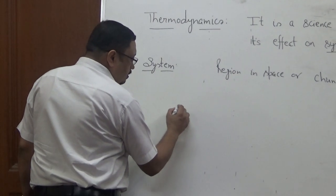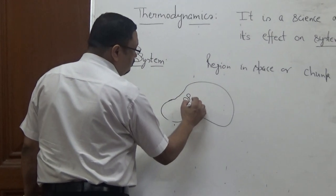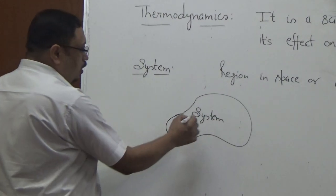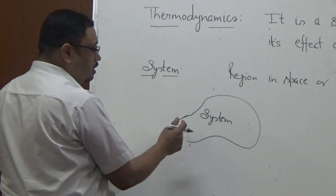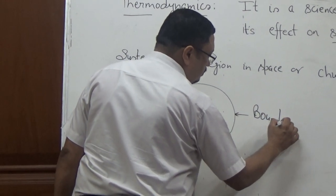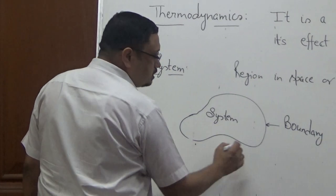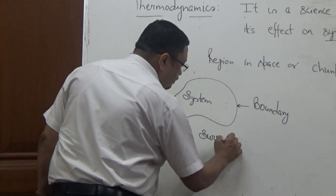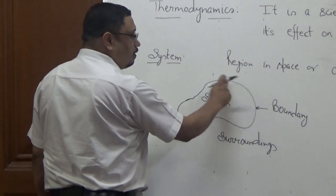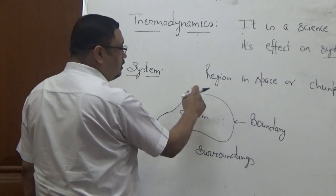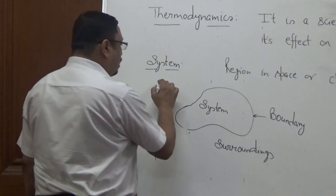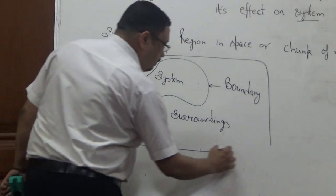This is our thermodynamic system on which we are concentrating ourselves to solve a thermodynamic problem. To distinguish this system from its surroundings, we need a boundary — this is called the boundary of the system. Outside the system boundary, we have surroundings. If we take the union of system and surroundings, it becomes the universe.